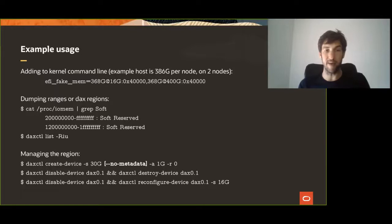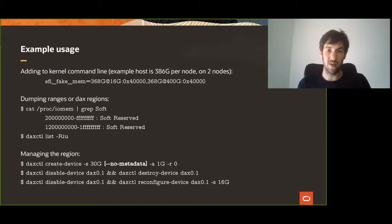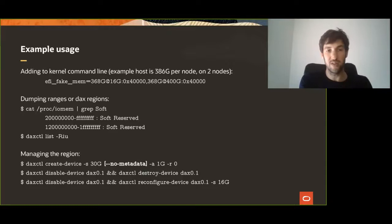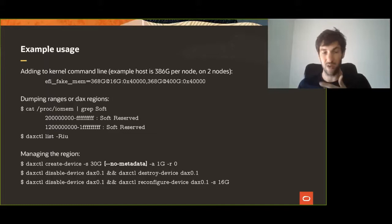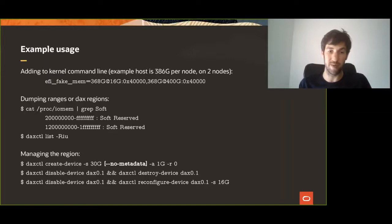In practice, what you do is specify this EFI fake map option. As you can tell from what it describes, it's not really intuitive, so there is still work to make this slightly more user-friendly. But what we are essentially describing here is that my hypervisor is going to have 16 gigabytes per node available for user space and kernel-managed allocations, and you associate the rest for DAX — so 368 gigs per node. You essentially bring up two regions, one per NUMA node. On procfs, this appears as soft reserved, and you then use DAX tools to instrument this region, or you can come up with your own tools using the sysfs ABI for the purpose.